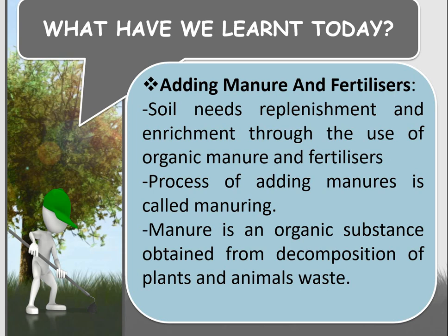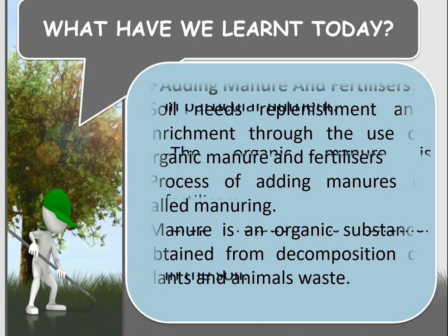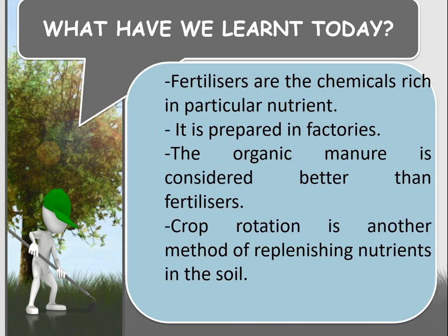The soil needs replenishment and enrichment through the use of organic manure and fertilizers. The process of adding manures is called manuring. Manure is an organic substance obtained from the decomposition of plants and animal waste. Fertilizers are chemicals rich in particular nutrients, prepared in factories. Organic manure is considered better than fertilizers. Crop rotation is another method of replenishing nutrients in the soil.